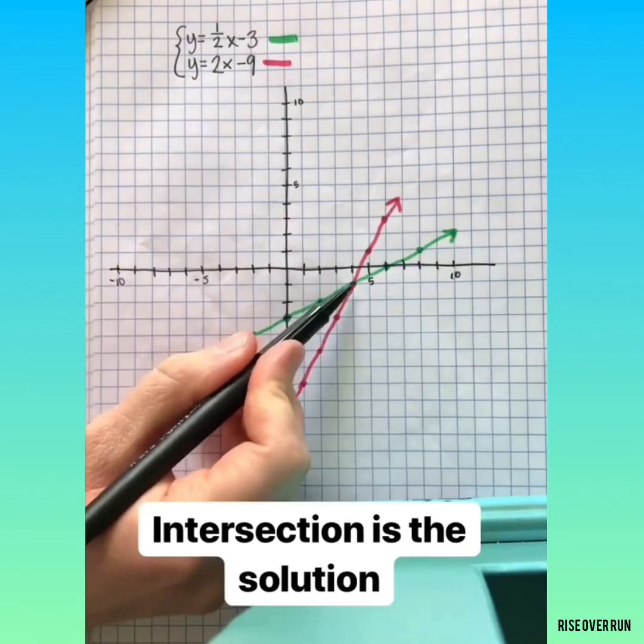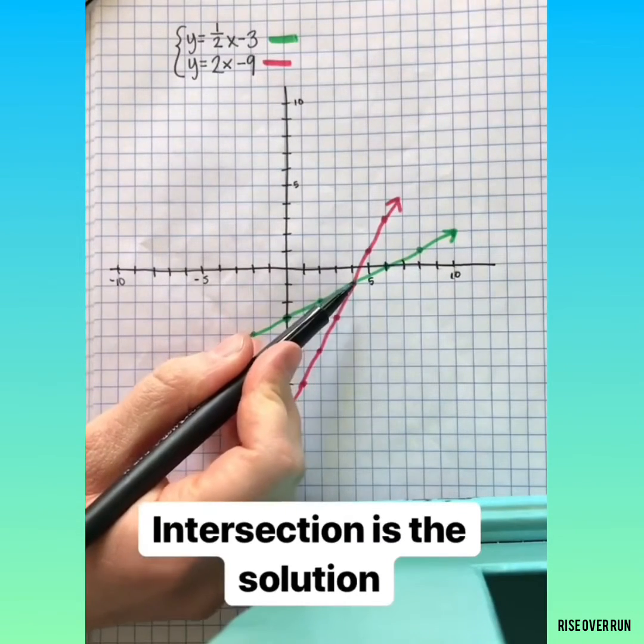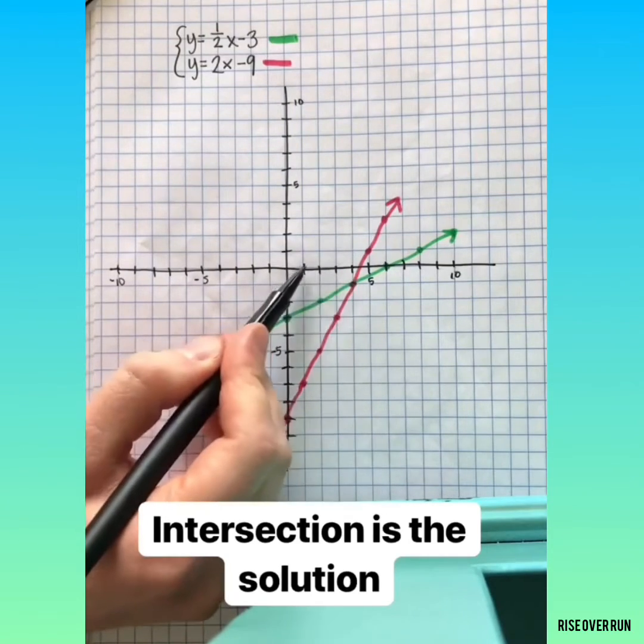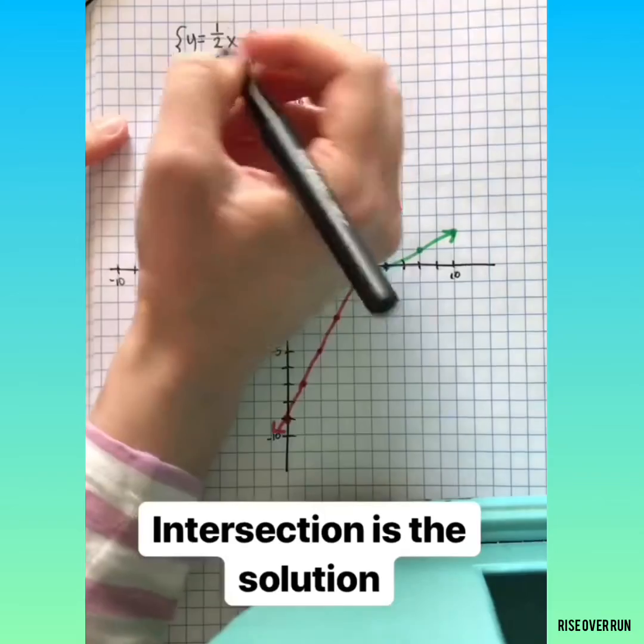The solution to this system is this point where they intersect. That's the one point that both lines have in common. So that point is located at 4, negative 1.